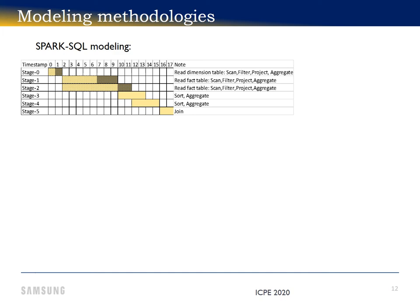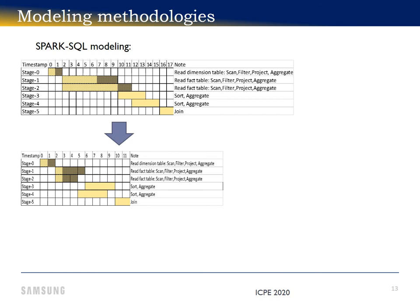We assume the device read bandwidth to be 3 gigabytes per second. When we apply this methodology to this query, the response time decreases from 18 to 12 seconds. This bottom image is our model estimate for this query. We apply the same analysis to a subset of TPC-DS queries.